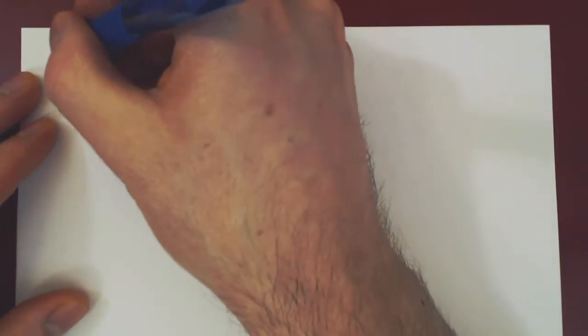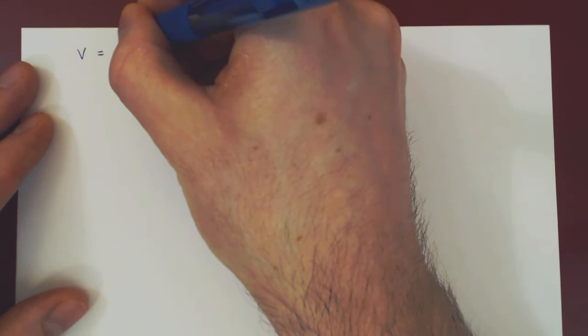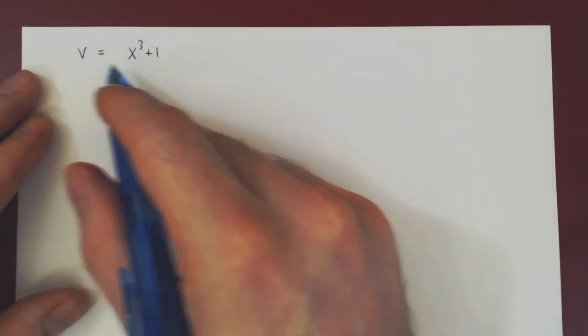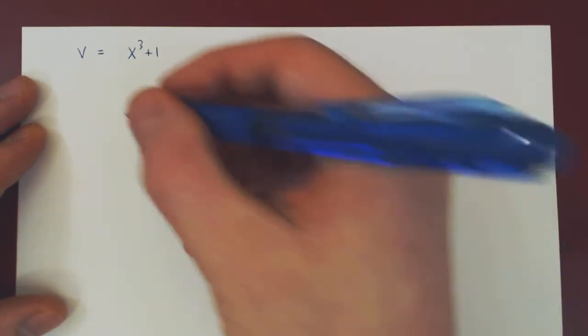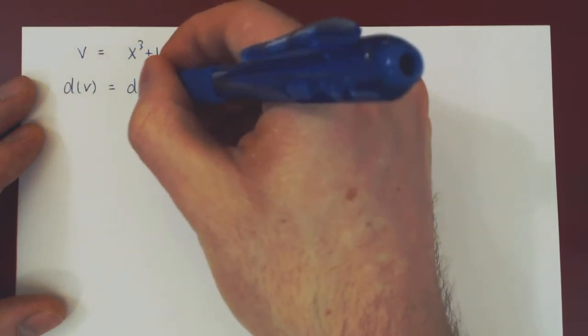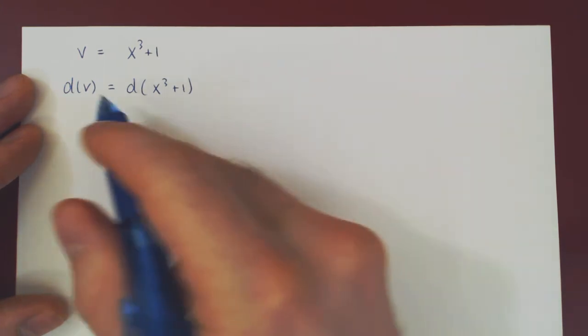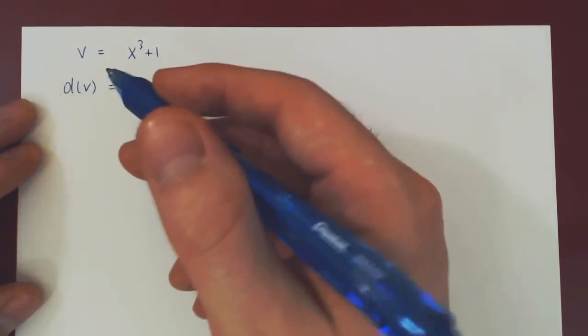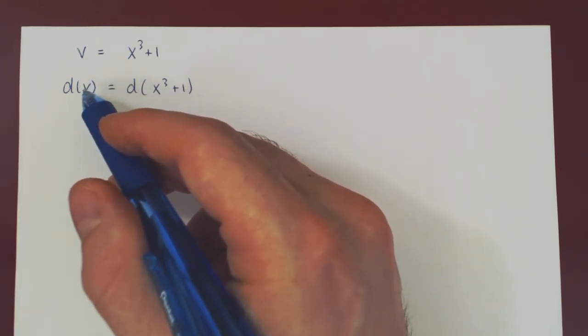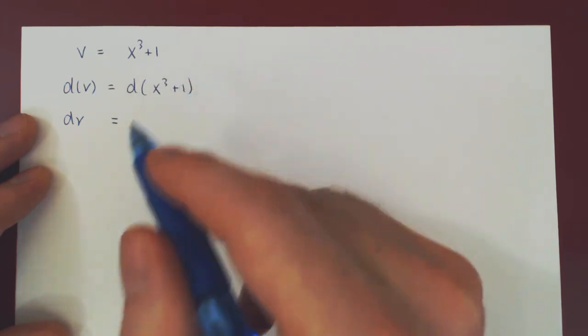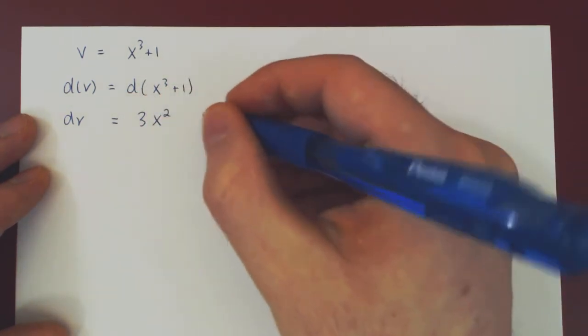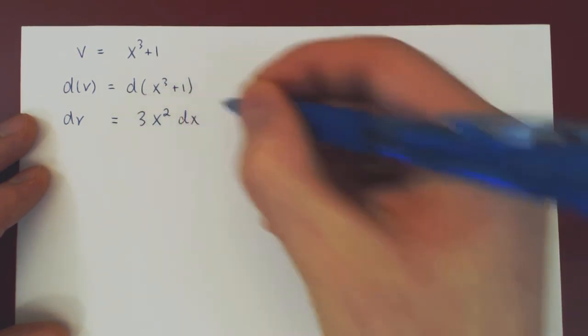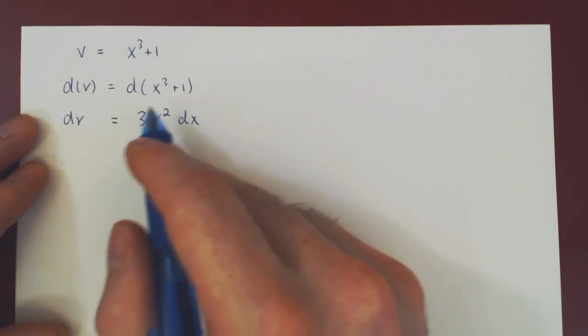Let's consider a few examples. Suppose v equals x cubed plus 1. Here we have a function of v equal to a function of x — since they are equal, they have the same differential. The differential of v is just dv. The differential of x cubed plus 1 is the derivative with respect to x, which is 3x squared, times dx. So if v equals x cubed plus 1, then dv equals 3x squared dx.